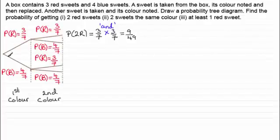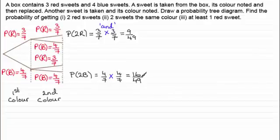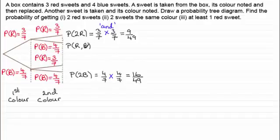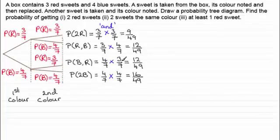Similarly, we can work out the probability of two blue sweets: 4/7 times 4/7 equals 16/49. If we wanted the probability of a red sweet first and then a blue sweet, we follow that route through the tree diagram — P(R, B) — and get 3/7 times 4/7, a total of 12/49. Similarly, the probability of a blue sweet followed by a red is P(B, R) = 4/7 times 3/7, the AND rule again, which also equals 12/49.